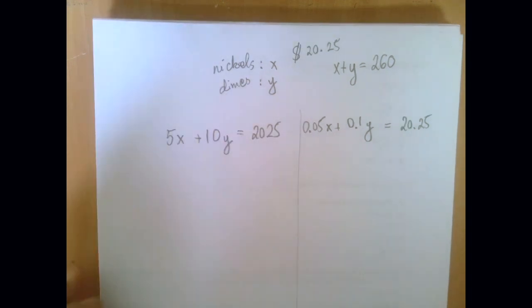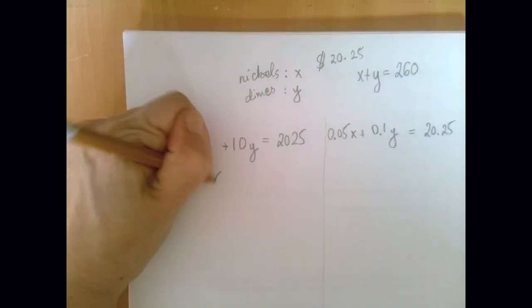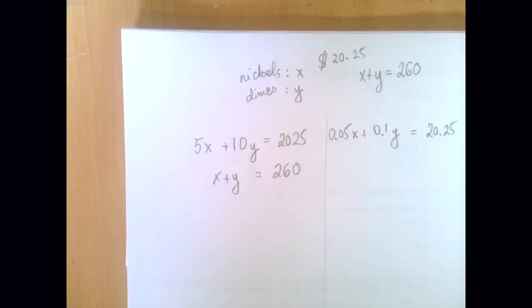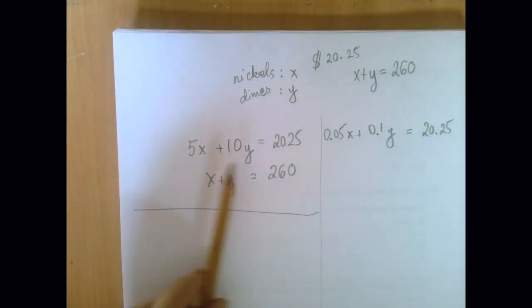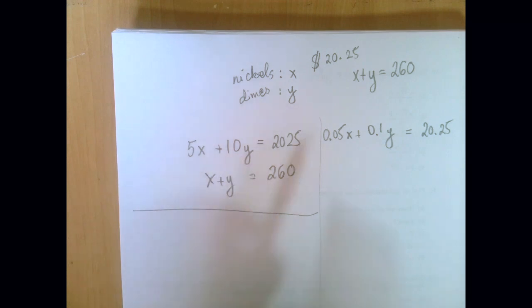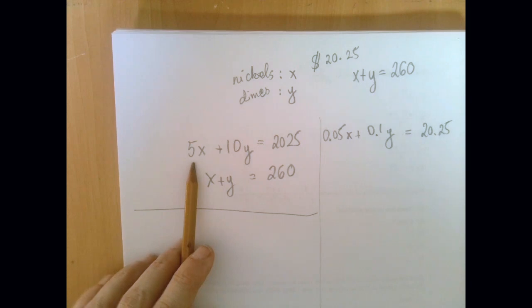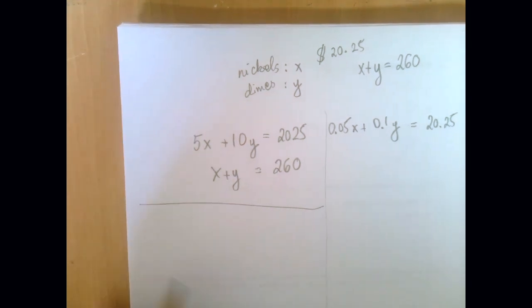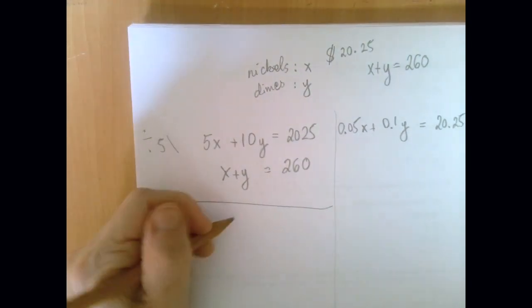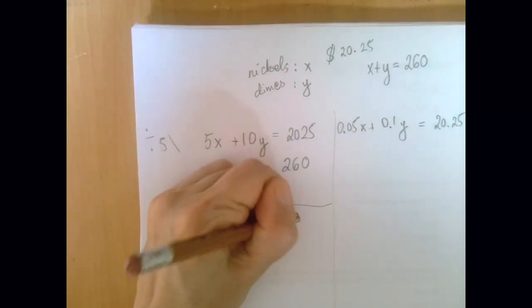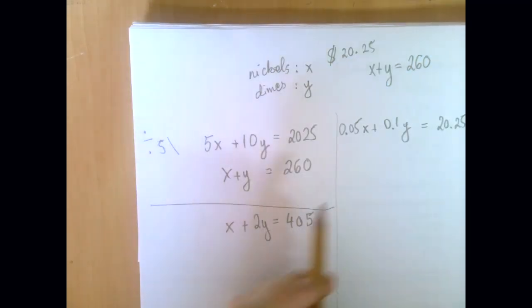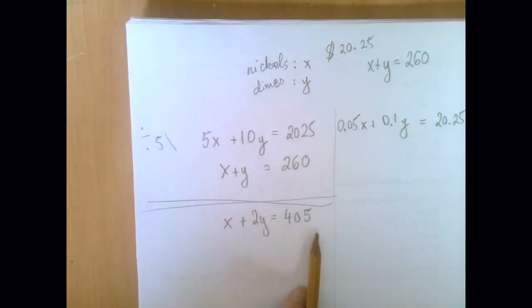So if we are going to run with this equation and x plus y equals 260, then we have this system to solve. Now, similarly to the chicken-cow problem, if you investigate, the first equation can be simplified because every single coefficient is divisible by 5. And once we divide it by 5, what are we going to get? So we're going to divide the first equation by 5. So then we're going to get x plus 2y, so I'm getting 405 for the other side.